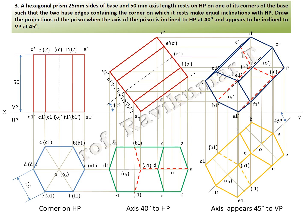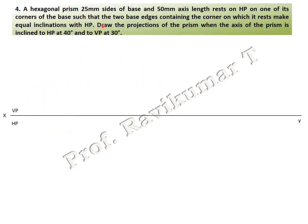The next problem is similar to the corner condition problem, but the word 'appears' is absent. If 'appears' is absent, it is a with-locus problem. Everything is the same, but you must find the beta angle and complete the beta construction before completing the final position.